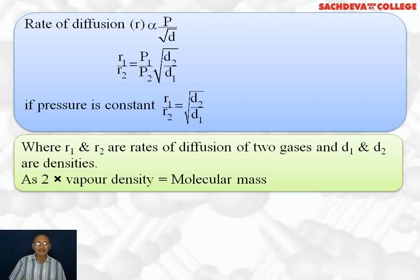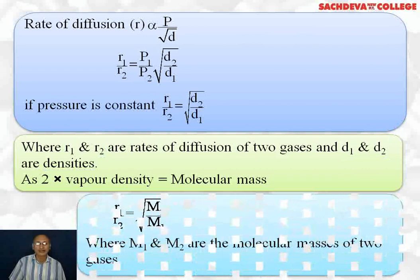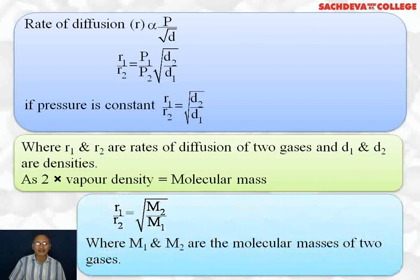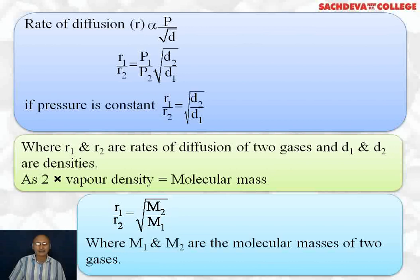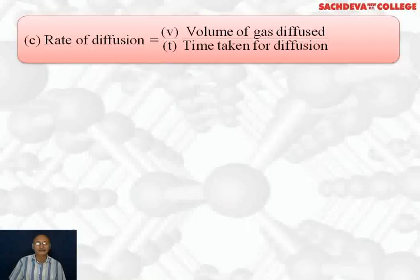As we know that molecular mass is twice of vapor density, therefore we can also write R1 over R2 is equal to square root of M2 over M1, where M1 and M2 are molecular masses of two gases.